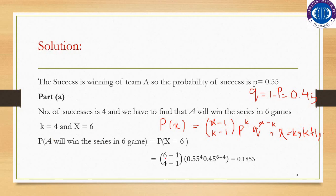Using the probability mass function of the Negative Binomial Distribution and substituting X = 6, K = 4, P = 0.55, and Q = 0.45, by simplifying we get the probability that Team A will win the series in 6 games, which is 0.1853.